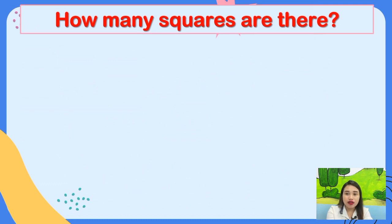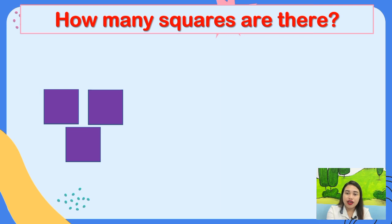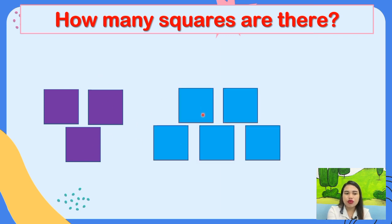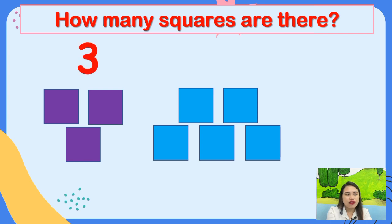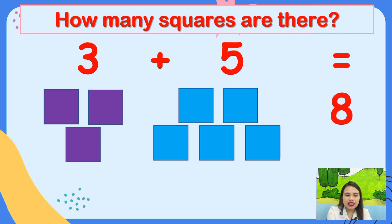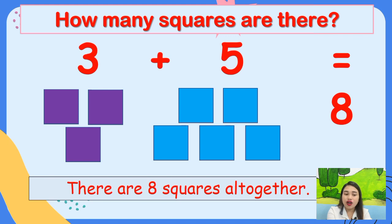Good job. How many squares are there? How many purple squares? 1, 2, 3 — three purple squares. How many blue squares? 1, 2, 3, 4, 5 — there are five blue squares. How many squares are there altogether? Three plus five equals eight. Therefore, there are eight squares altogether.